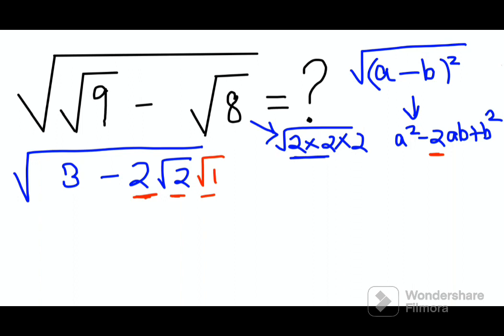Now if you use this particular expansion, you should get what? Root 2—this is your a, right—root 2 square minus 2 root 2 into root 1 plus root 1 the whole square.